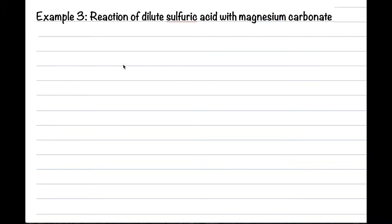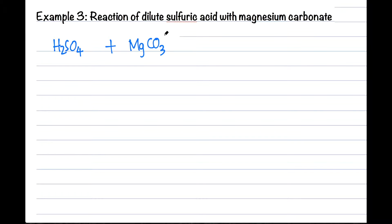Let's try another example. This time, since you know the steps already, please follow along and try this equation on a separate piece of paper as well. We have dilute sulfuric acid and magnesium carbonate. Let's write the chemical formula first — magnesium carbonate is MgCO₃. Since this is an acid-carbonate reaction it will give magnesium sulfate, carbon dioxide gas, and water.